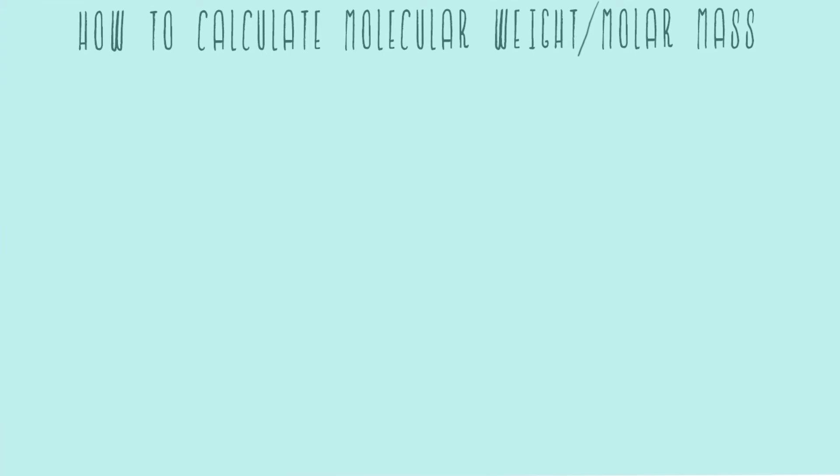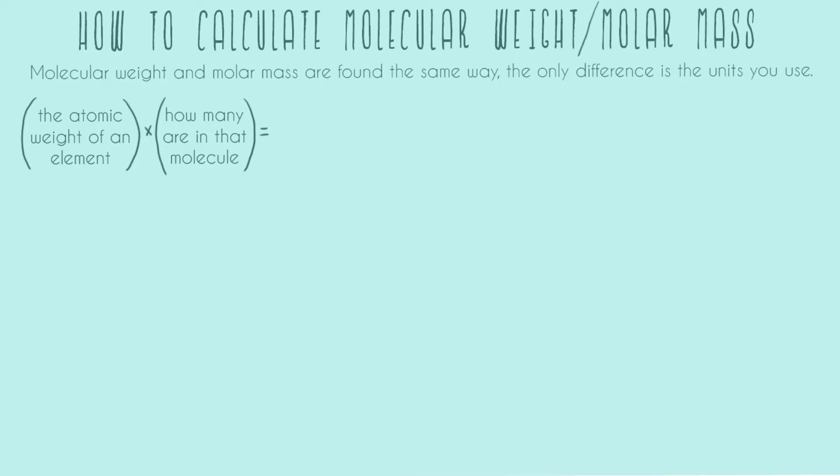In this video, I'm going to go over how to calculate molecular weight and molar mass. The first thing is that molecular weight and molar mass are found the same way. The only difference is the units you use at the end of the problem. The formula for both is you take the atomic weight of an element and multiply that by how many you have in that molecule. We have to do this for every element and then add them all together.